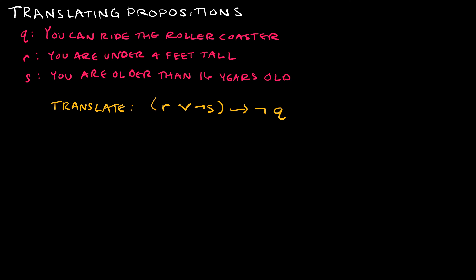Most of the time when you're translating you will go from English to a propositional logic statement. But let's look at going in the other direction. If I give you the propositional statement and ask you to write it in English — here Q represents 'you can ride the roller coaster,' R represents 'you are under four feet tall,' and S represents 'you are older than 16 years old,' and the statement given is R or not S implies not Q. A helpful approach is to first write: if R or not S, then not Q, replacing the symbols with English connectives.